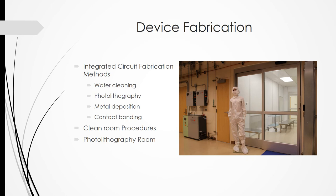Now that we understand what it is we are going to make, we need to have a procedure to fabricate the device. Since the structures that we are creating are on a nanoscale, fabrication in any place other than a clean room would prove to be quite difficult and would be contaminated easily. Our procedures will be conducted similarly to integrated circuit fabrication, incorporating photolithography and metal deposition onto a wafer, allowing us to create the necessary Schottky structure for our device. Due to the nature of the clean room, we have to comply with the procedures and policies, especially gowning, to prevent contamination and maintain its cleanliness.